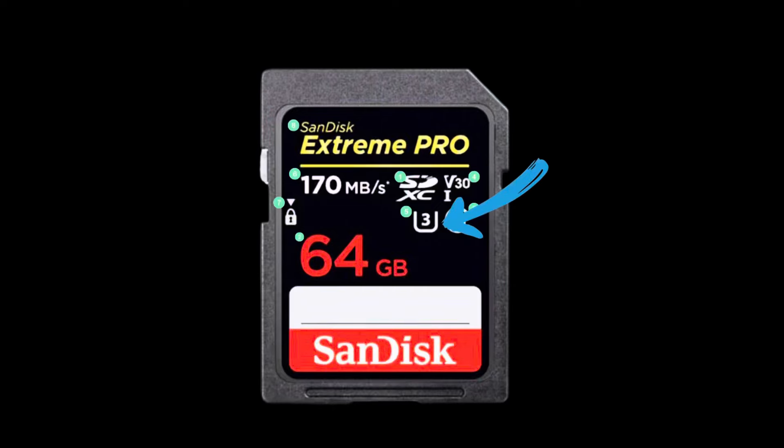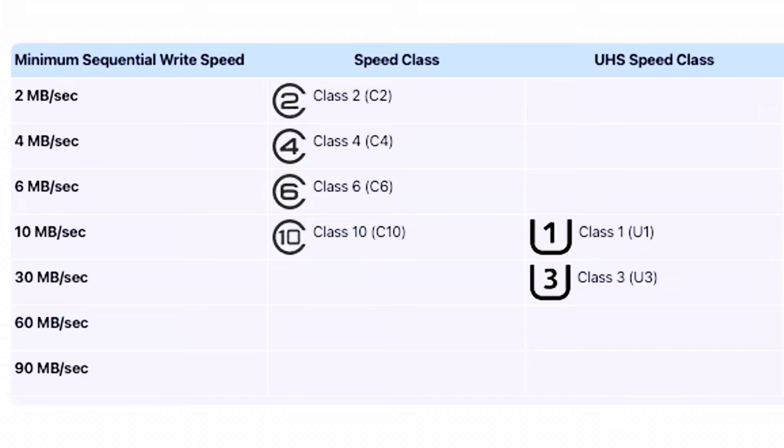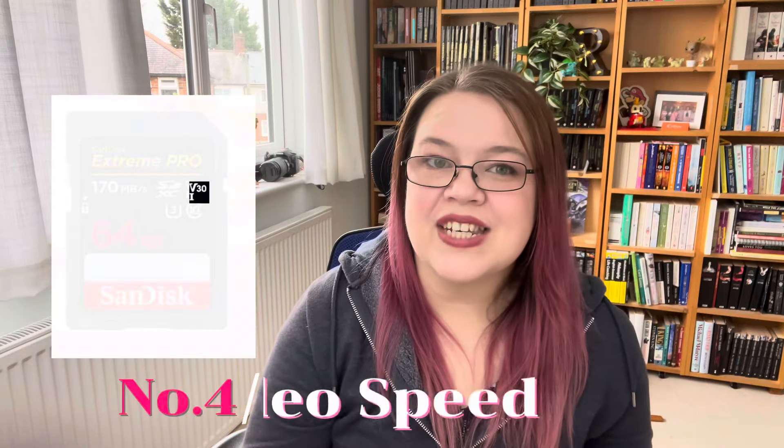You then have your Ultra High Speed class, which is your UHS, symbolized with a specific marking. That gives you an idea of the minimum write speed for your higher-end memory cards, which is normally a minimum of 10 megabytes per second. Things that support higher speeds are for more professional cameras — full frame or mirrorless cameras will need that higher rate, so make sure you're looking for that symbol.